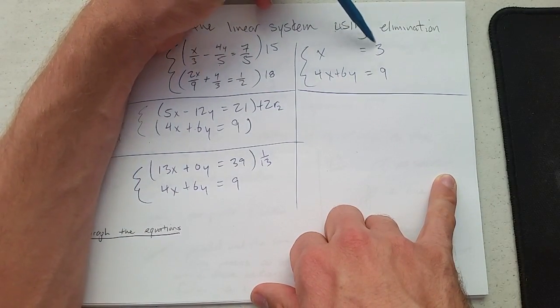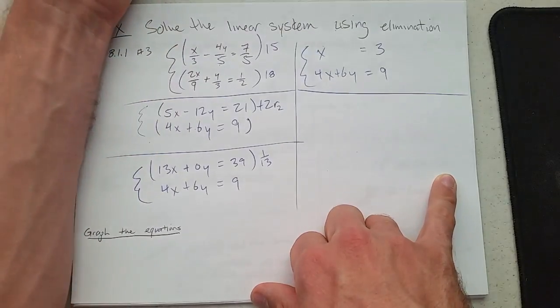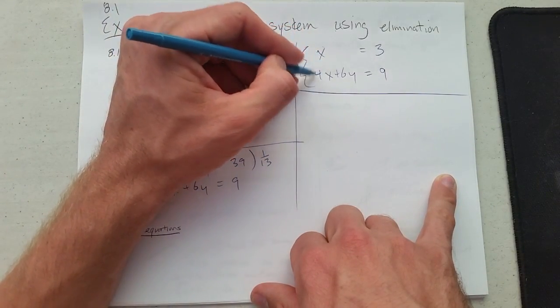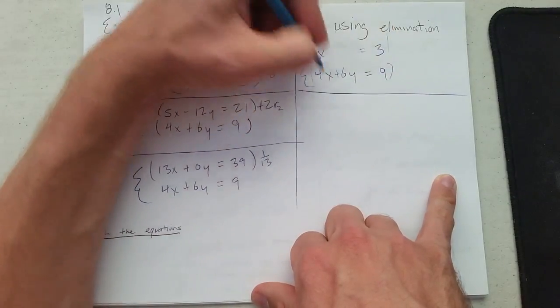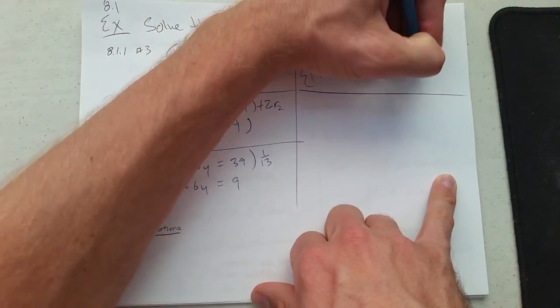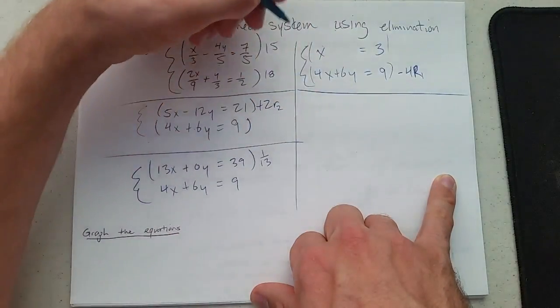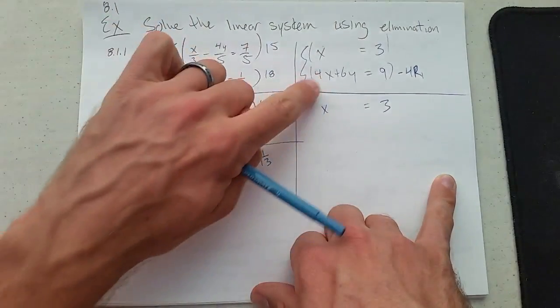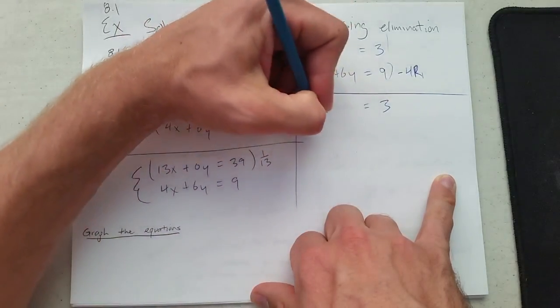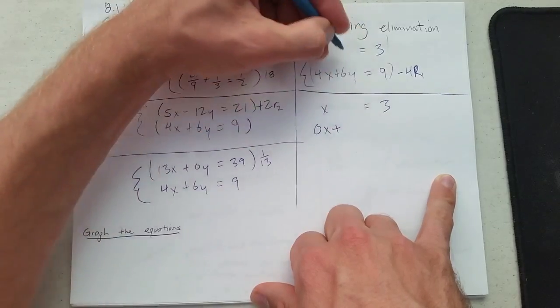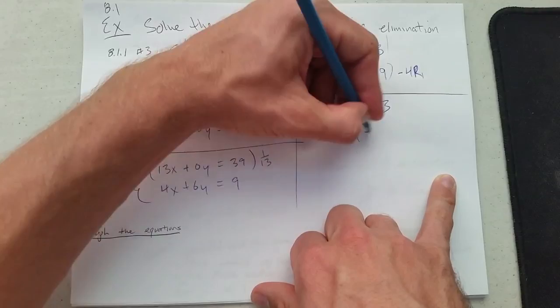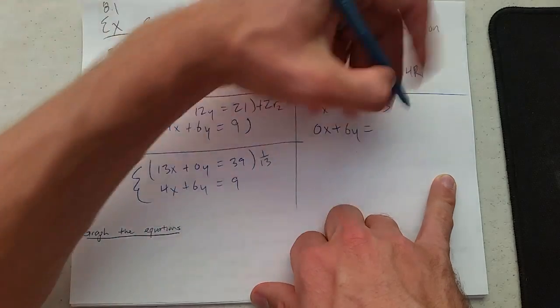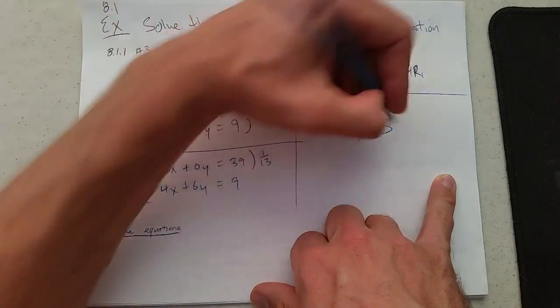From here, many would do substitution—plug in x equals 3 and solve for y. I'm going to do something different: reuse elimination to knock out the 4x. I'll take negative 4 times row 1 and add it to row 2. Row 1 doesn't change—x is still 3. Row 2: negative 4 times x is negative 4x, plus 4x is 0x. Plus 6y is 6y. Negative 4 times 3 is negative 12, and negative 12 plus 9 is negative 3.